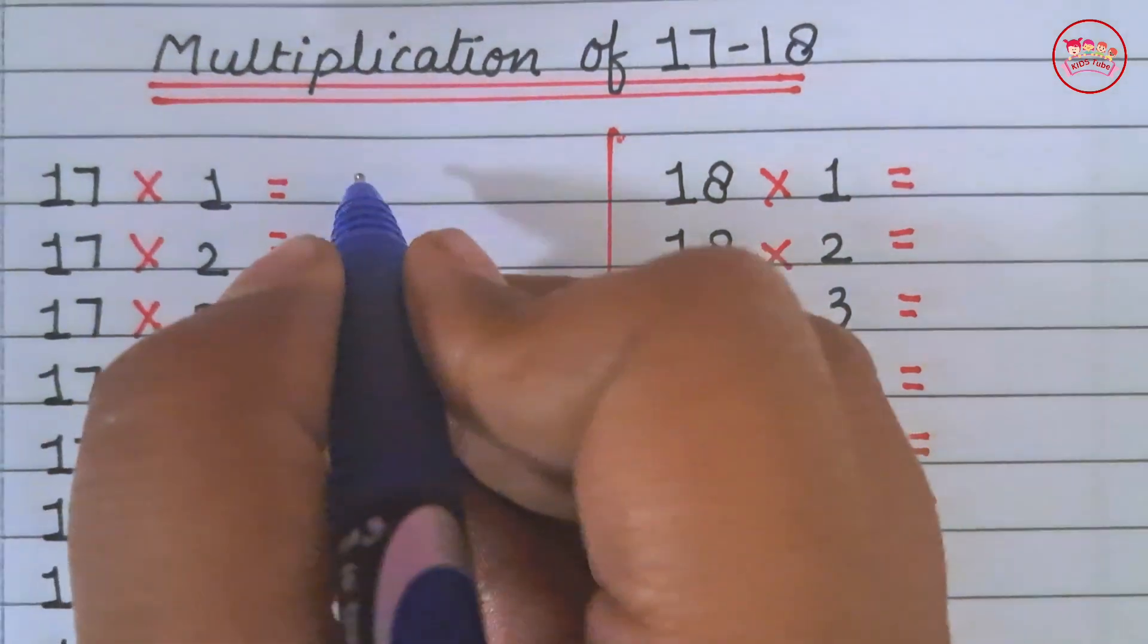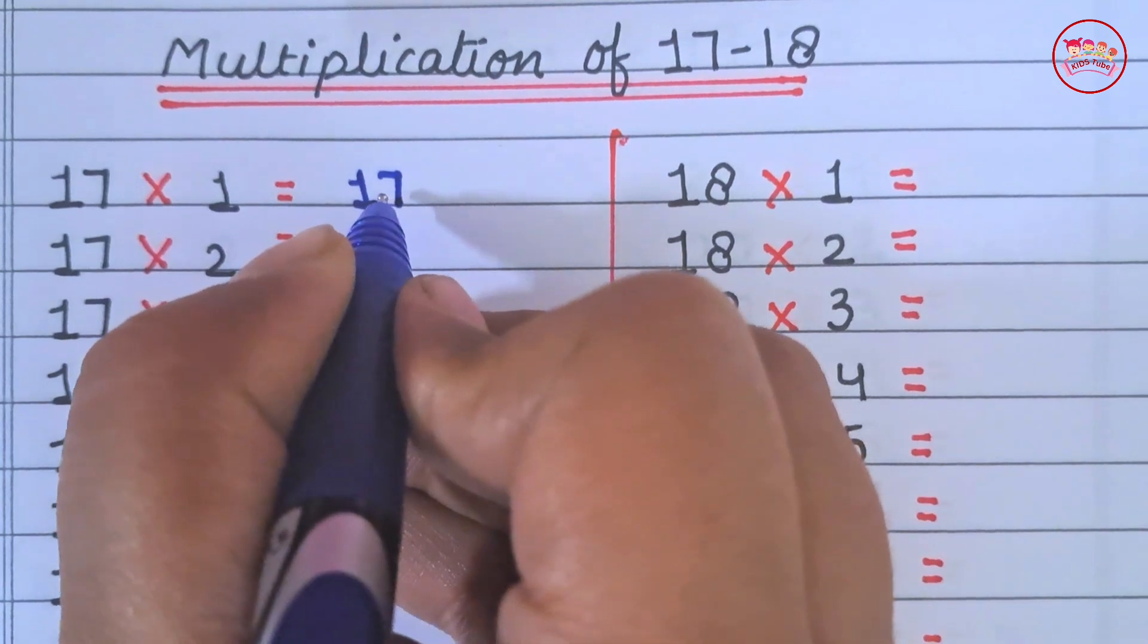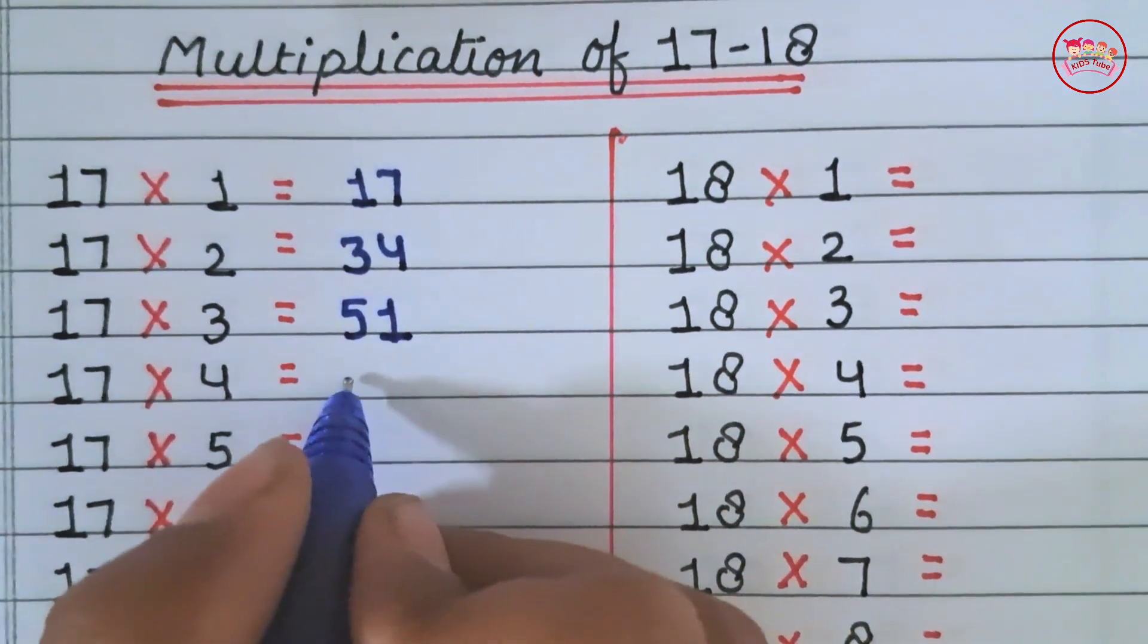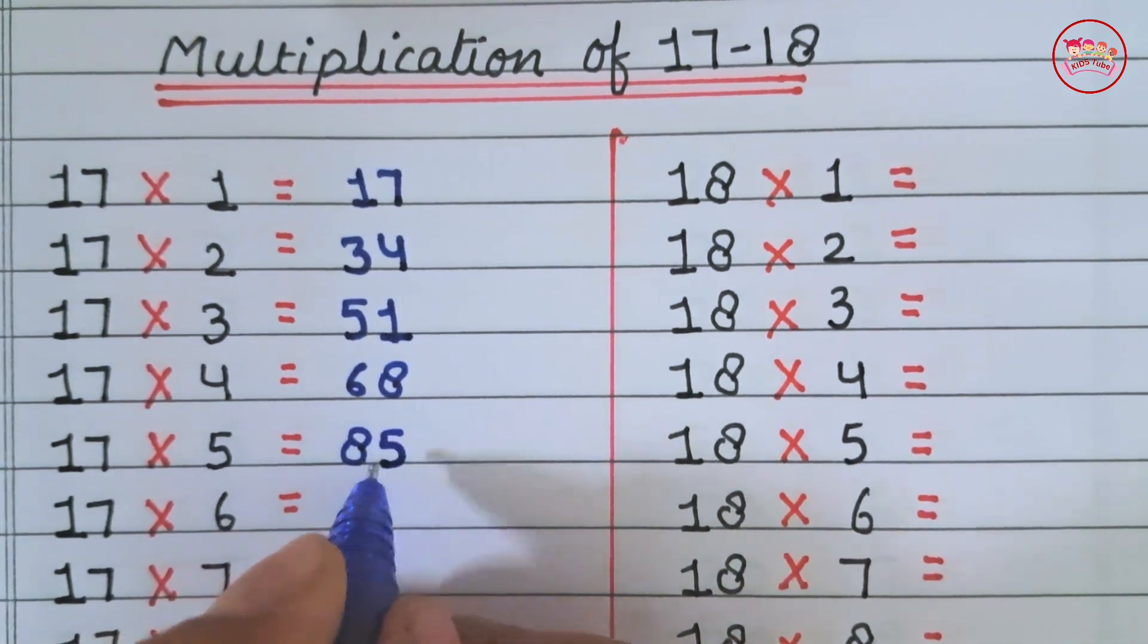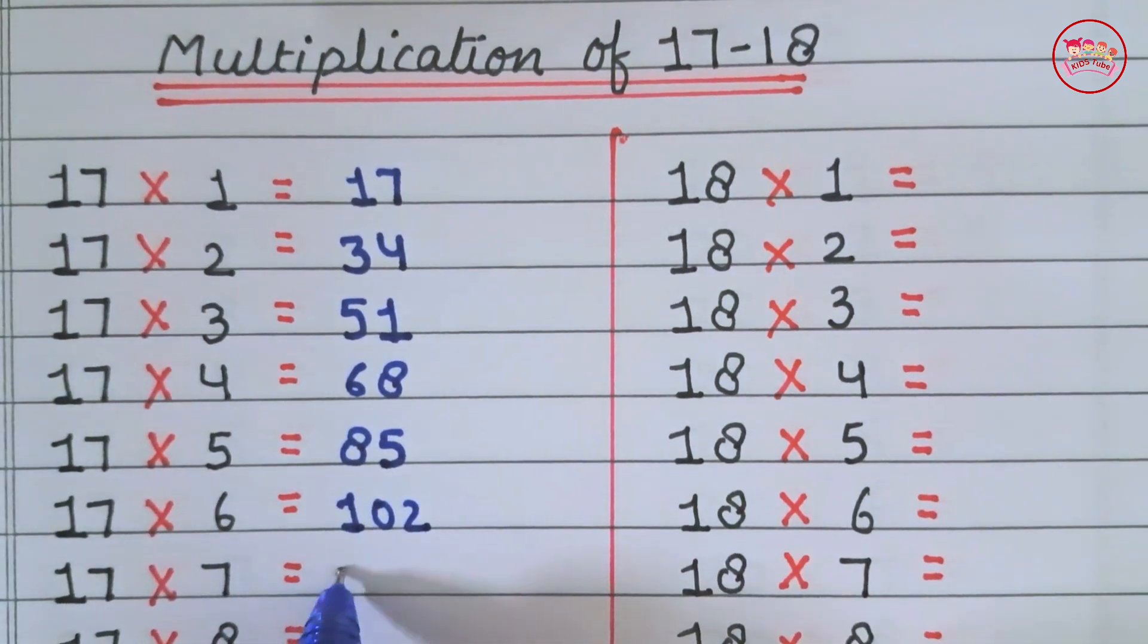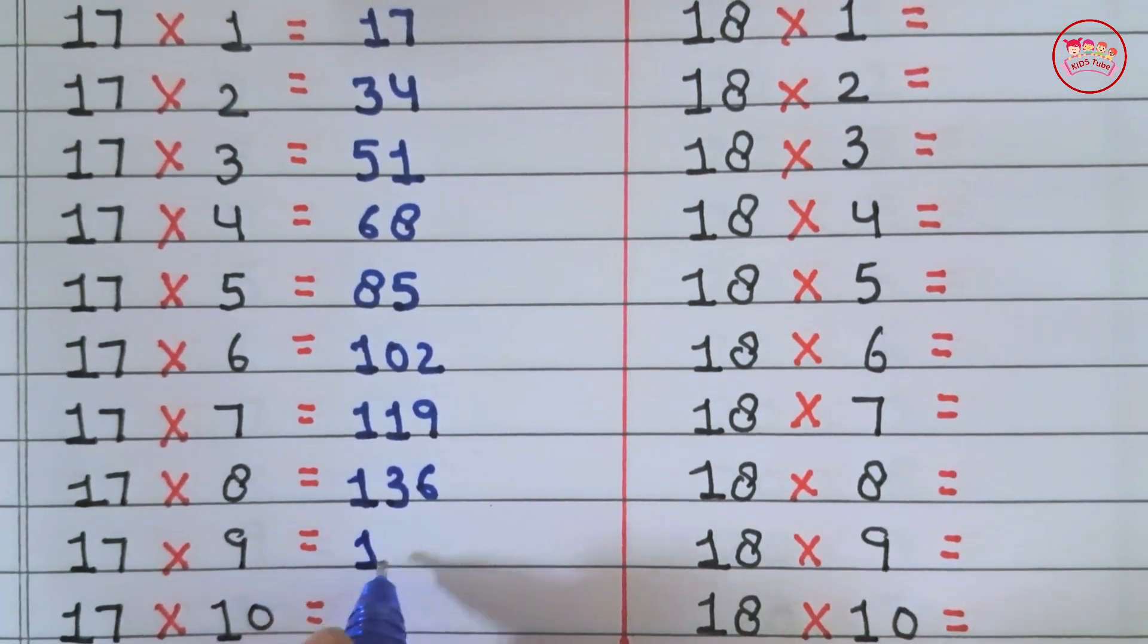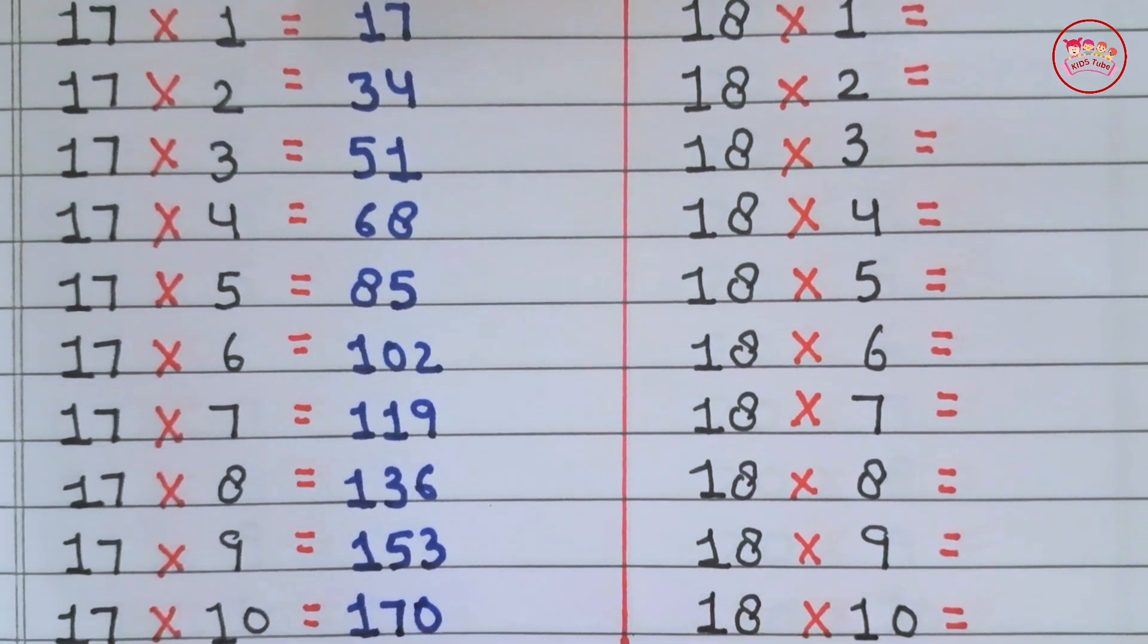Multiplication of 17 and 18. 17×1 is 17, 17×2 is 34, 17×3 is 51, 17×4 is 68, 17×5 is 85, 17×6 is 102, 17×7 is 119, 17×8 is 136, 17×9 is 153, 17×10 is 170.